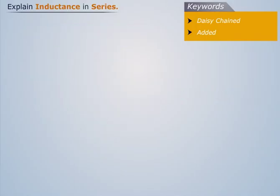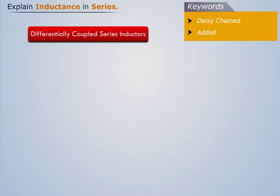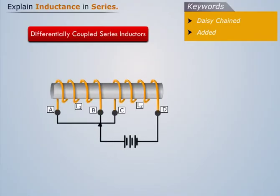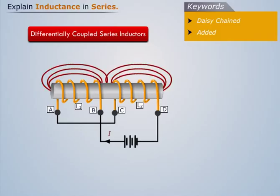And now let's discuss differentially coupled coils. If the magnetic flux produced by the current flows through the coils in the opposite direction, then the coils are said to be differentially coupled. In this case, same current flows through each coil, but in opposite directions.